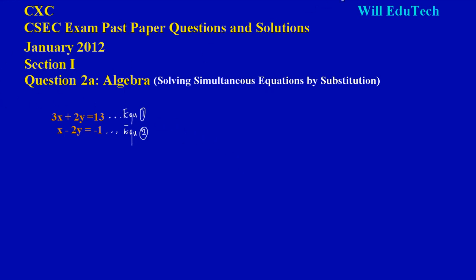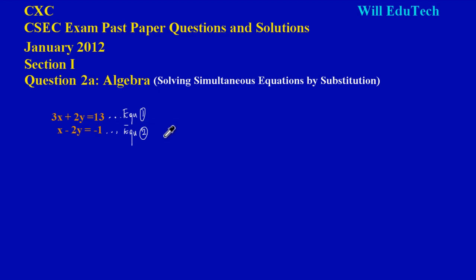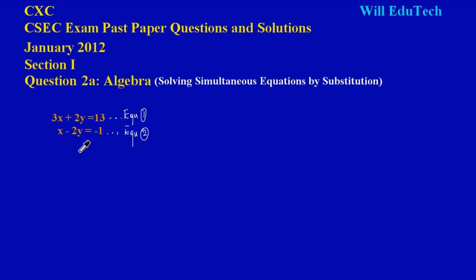Welcome, my friends. It's a pleasure to have you back here on Will EduTech. In this video we're continuing our edition on CSEC exam past paper questions and solutions. We are on the January 2012 paper, looking at question 2a. This question falls under the general topic of algebra on the syllabus, and more specifically we are solving a pair of simultaneous equations. I'll be solving this pair by substitution. The video following this will cover the same question solved by elimination, so you can choose which method you prefer.